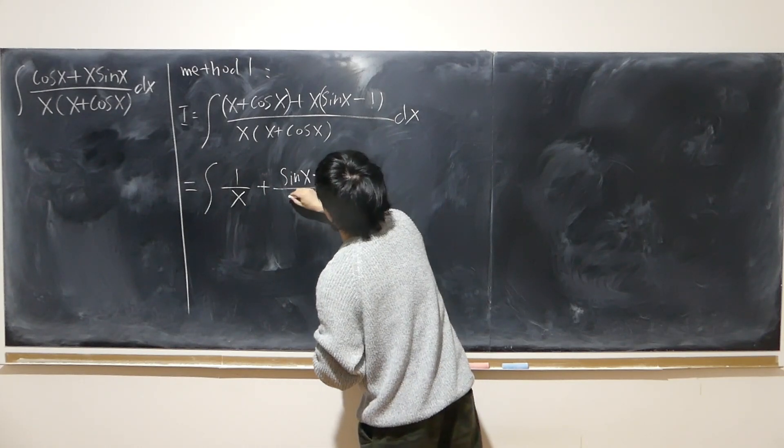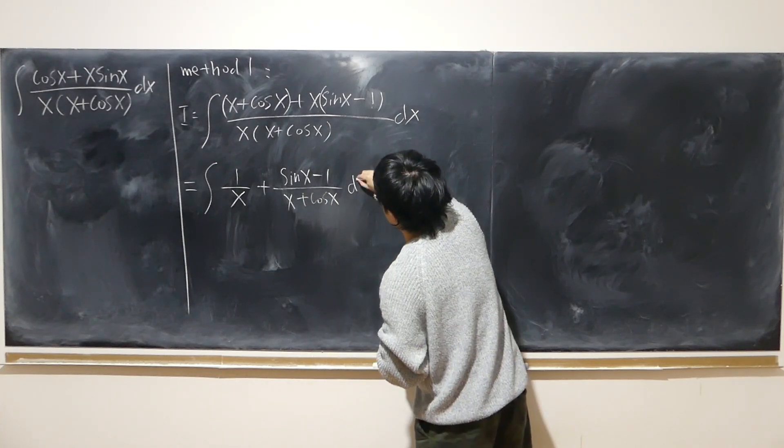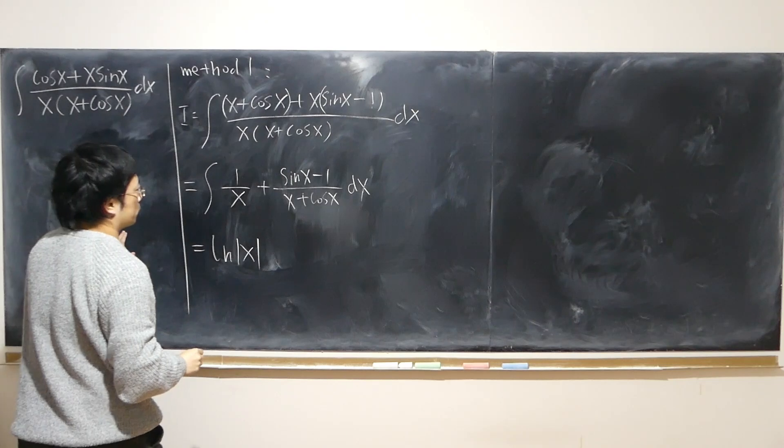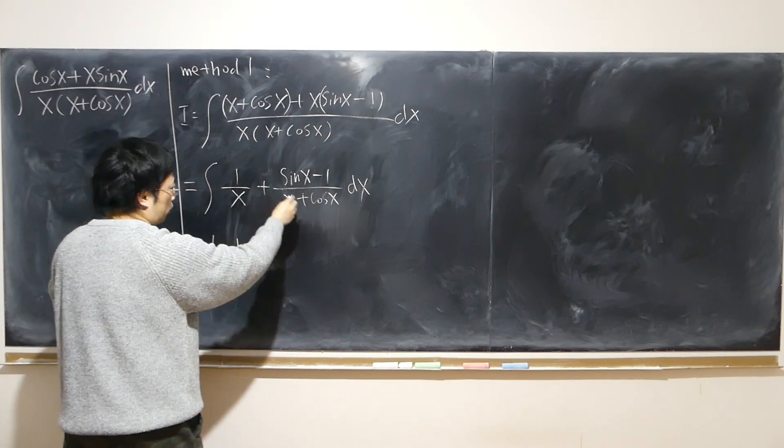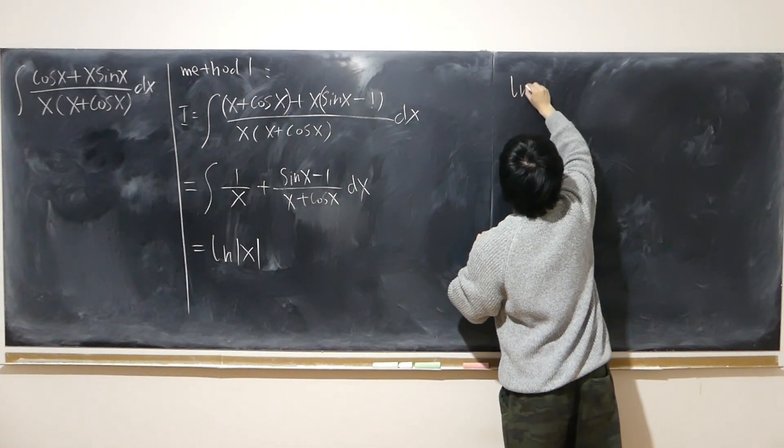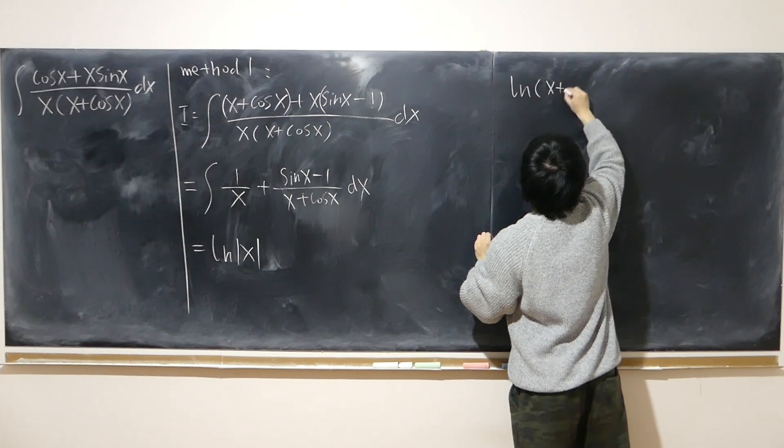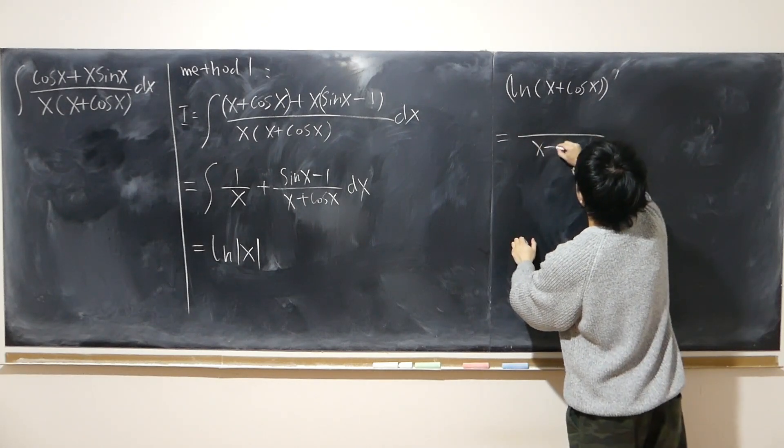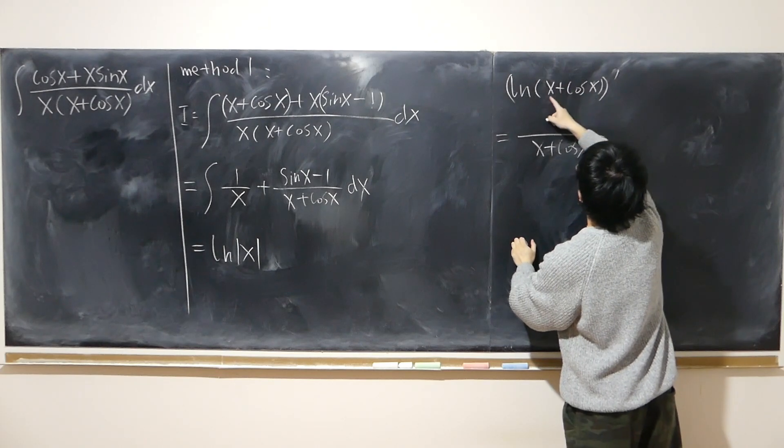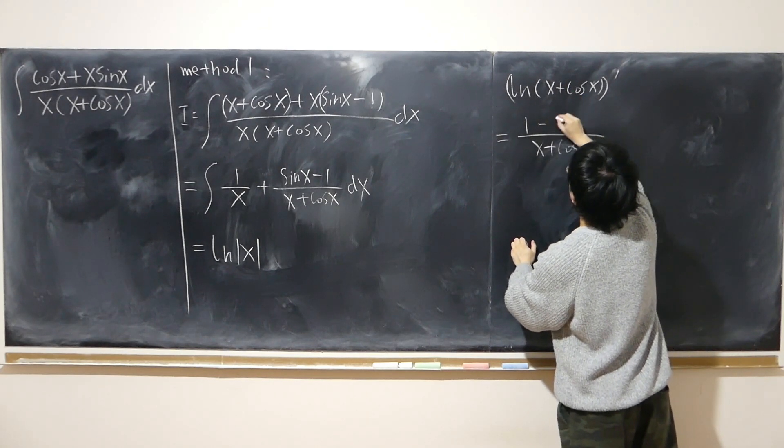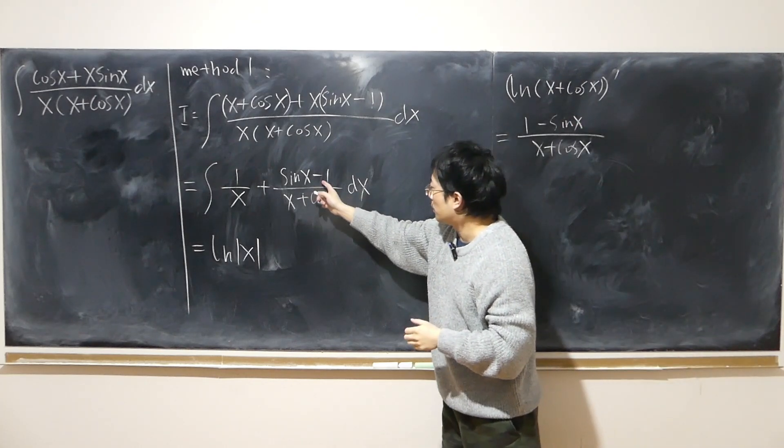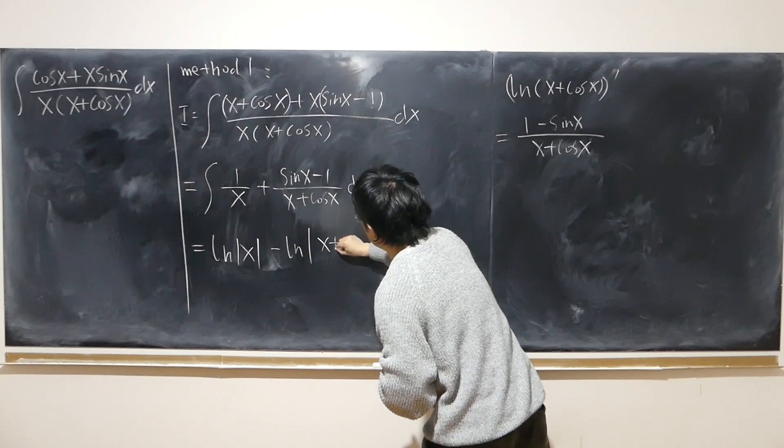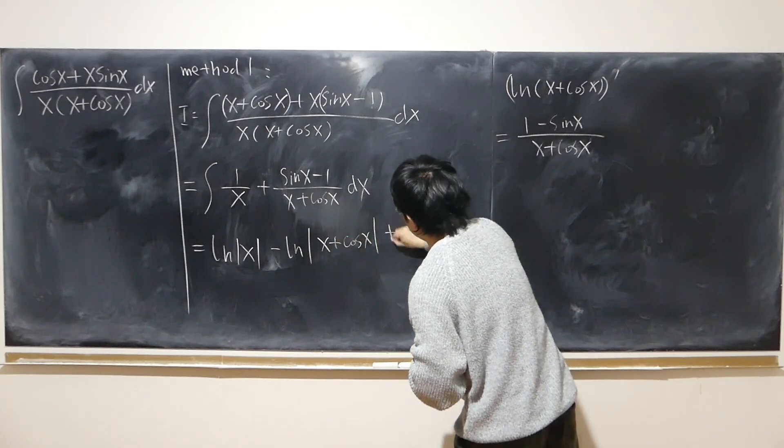Sine minus 1 over x plus cosine x dx. And so this is easy. Log x, of course, absolute value. And this looks like the derivative of log of this bit. Why? Because if we say log of x plus cosine x, let's differentiate that. So put this down on the bottom, I differentiate inside. So 1 minus sine x. Here is sine x minus 1. So simply just minus log absolute value x plus cosine x plus c.